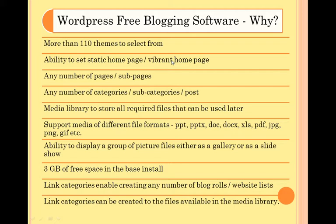WordPress has got more than 110 themes to select from. You can have a static home page or a vibrant home page. You can have any number of pages and sub-pages, any number of categories and sub-categories. You can have a media library to store all the files you may require in future. WordPress supports many different file formats, and you can have pictures displayed as a gallery or a slideshow. They give you 3GB of free space.